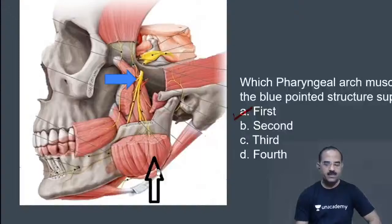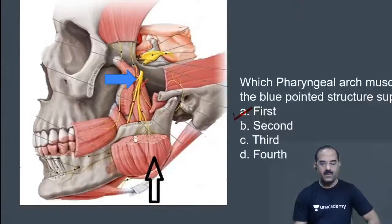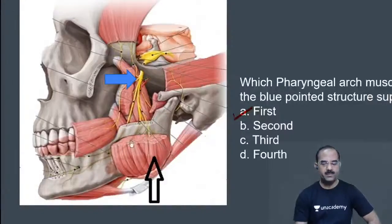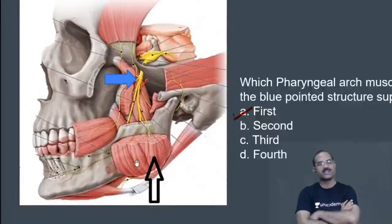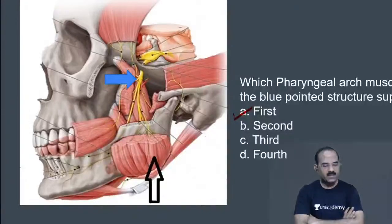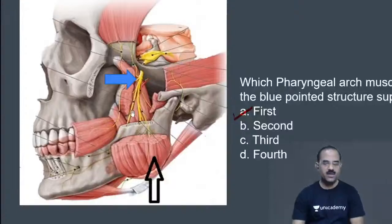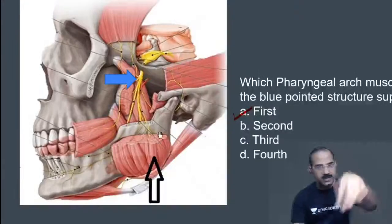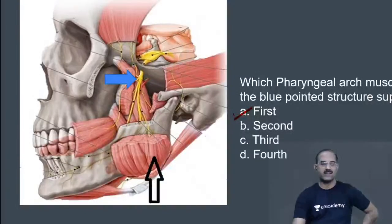The black arrow points to the masseter. The muscle lying deep, inserted on the medial side of the angle of the mandible, is the medial pterygoid. All the nerves are lying on the medial pterygoid. The muscle that has been cut is the lateral pterygoid.